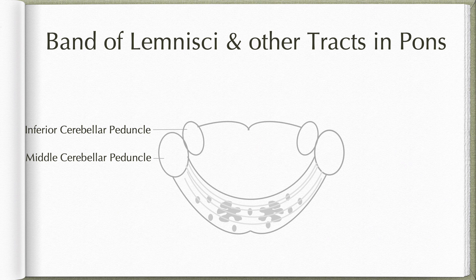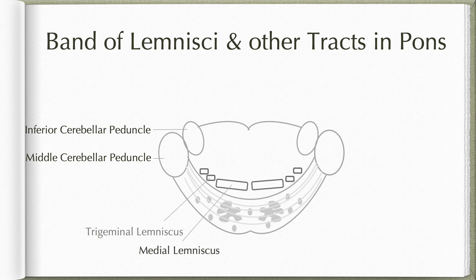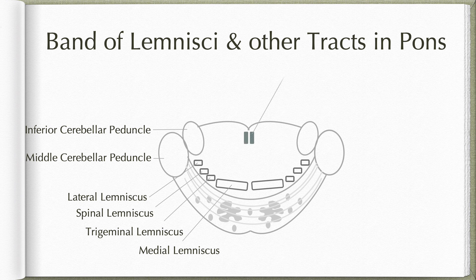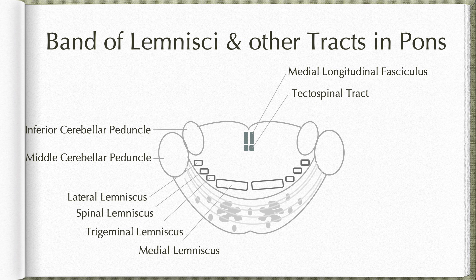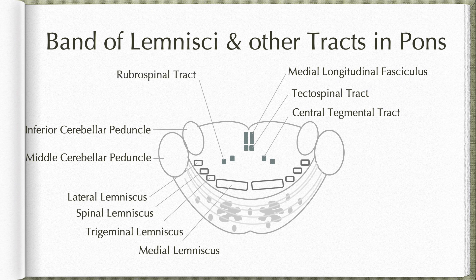Coming to the white matter in the tegmental portion, immediately behind the basilar part we have a band of lemnisci. From medial to lateral side, we have the medial lemniscus, trigeminal lemniscus, spinal lemniscus, and further laterally a fourth lemniscus beginning here known as lateral lemniscus. In addition, we also have a pair of medial longitudinal fasciculus and tectospinal tracts located on either side of the midline dorsally, central tegmental tracts and rubrospinal tracts in the lateral tegmental reticular formation area, and medial to the inferior cerebellar peduncle we have the anterior spinocerebellar tracts.